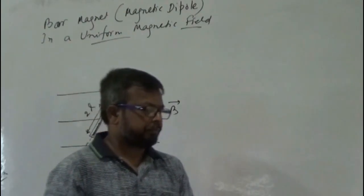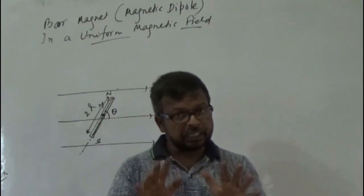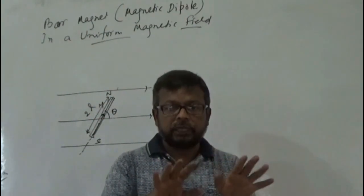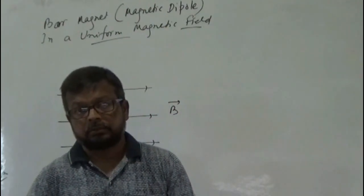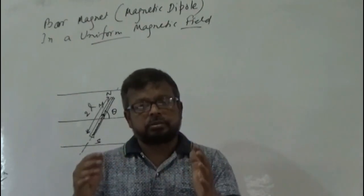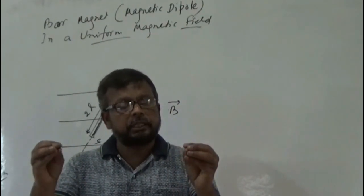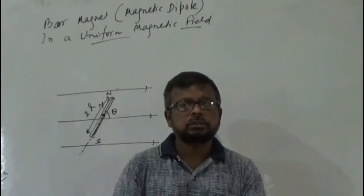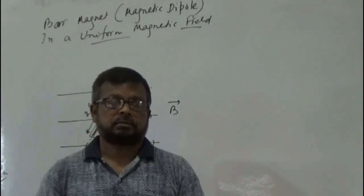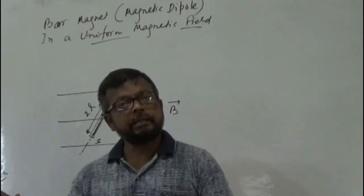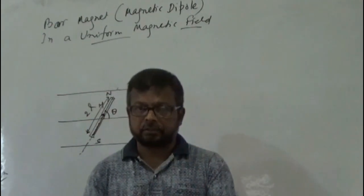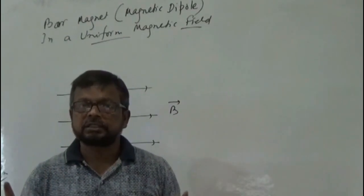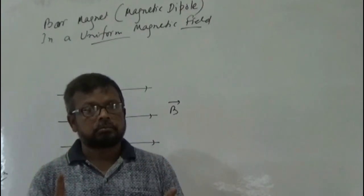But remember, this is just for definition. Why is it just a definition? Because you cannot, in practice, measure the magnetic field that way. You cannot get a unit north pole — you cannot get a north pole at all — because magnetic monopoles do not exist. You cannot get any monopole. That is why it is just for definition. In a practical case, you cannot get any isolated magnetic north pole or south pole; you always get north pole and south pole together.